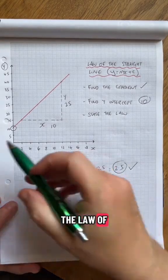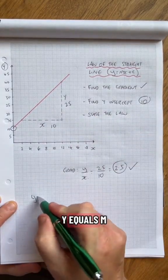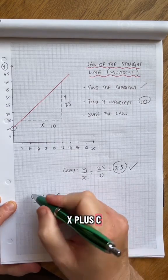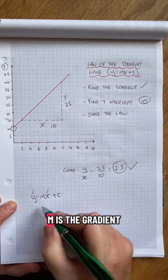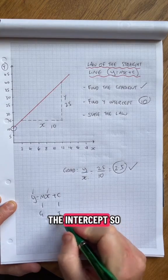And the law, the law of this line is y equals mx plus c. Y is just the y value, x is just an x value. M is the gradient and c is the intercept.